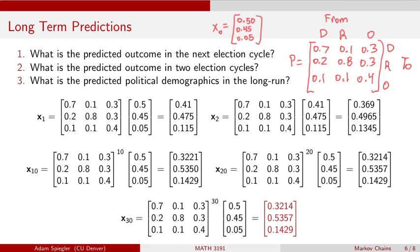So we kind of have this limiting behavior that as time goes out to infinity, as the power K goes to infinity, we see that X sub K, the result that we get, the prediction that we get, is approaching a constant vector. In this case, we approach the vector 0.3214, 0.5357, 0.1429. So there's something special about this vector that is giving us a prediction for the long run behavior.